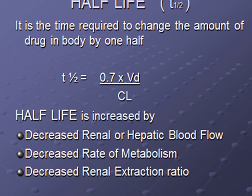If the rate of metabolism is reduced, plasma concentration will increase and half-life will be prolonged. Similarly, if the renal extraction ratio is decreased, half-life will again be increased.